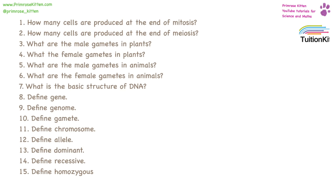How many cells are produced at the end of mitosis? Two. And at the end of meiosis, there are four.